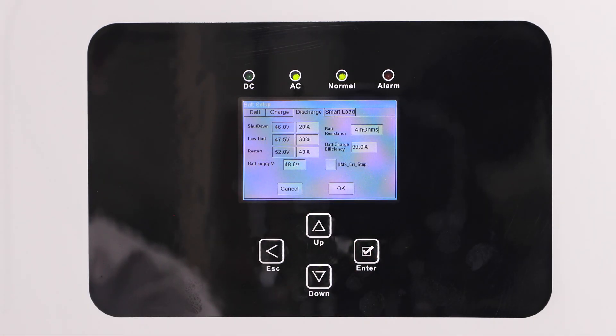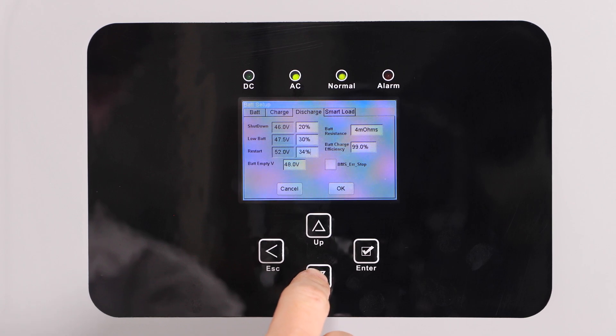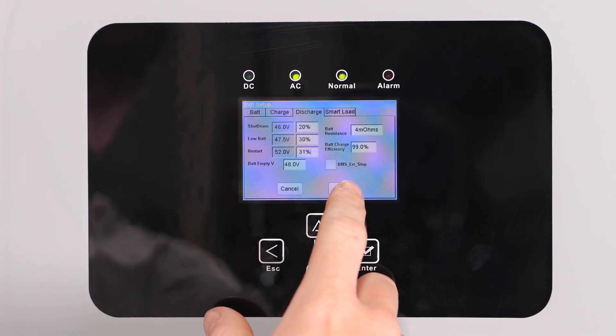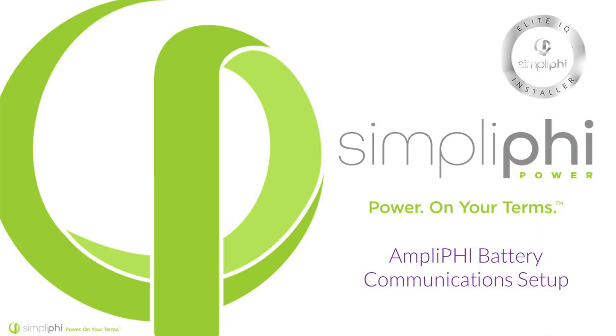Set the shutdown to 20%, low battery to 30%, and restart to 31%. Set the battery empty voltage to 48 and press OK to save your settings.